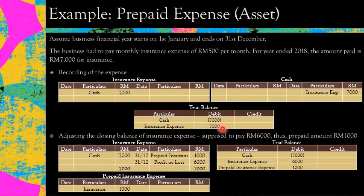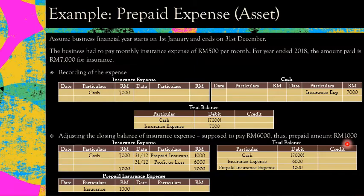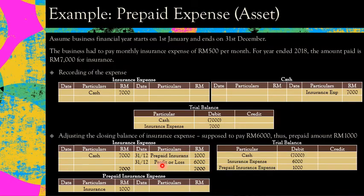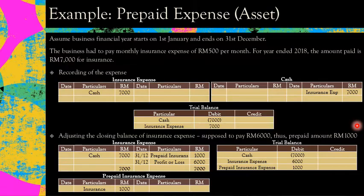That RM7,000 entry is incorrect — it should only be RM6,000. The prepaid amount is RM1,000, and since prepaid expense is an asset, you open a prepaid insurance expense account. Debit prepaid insurance expense RM1,000 and credit insurance expense RM1,000. So the amount transferred to profit or loss is RM6,000 — adjusted to what you should have paid, not what you actually paid.